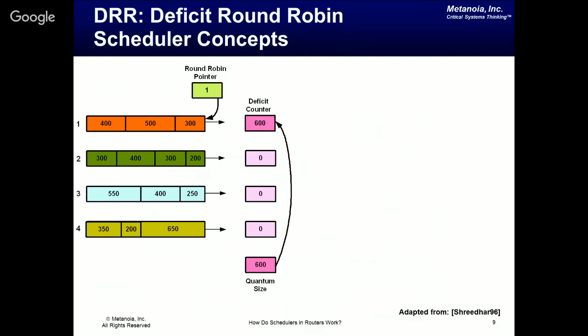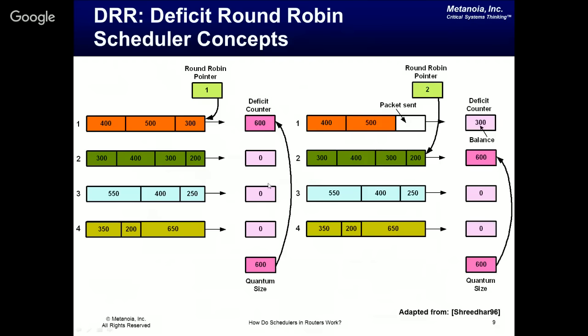Initially a round-robin pointer points to the first queue, and the deficit counter is initialized with the quantum size of 600. The scheduler compares the deficit counter with the size of the packet at the head of the queue. If the packet size (300) is less than the counter (600), it is served and the counter decrements to 300. The scheduler then checks if the next packet (500 bytes) can be served — since only 300 bytes of credit remain, it cannot, and the scheduler moves to the next queue.